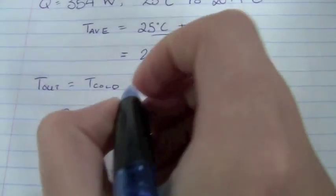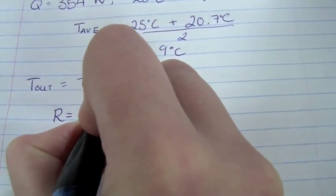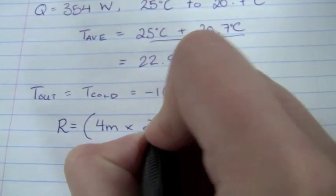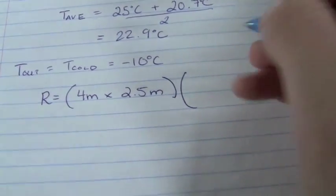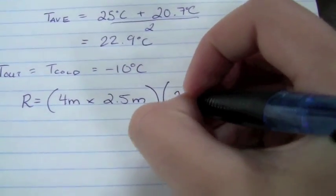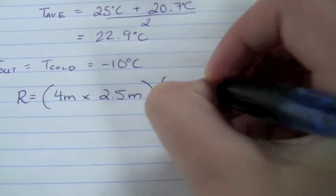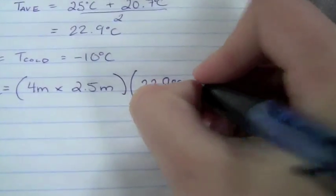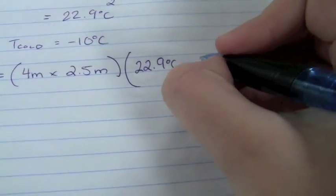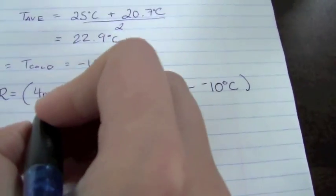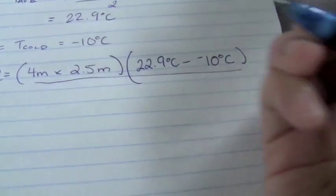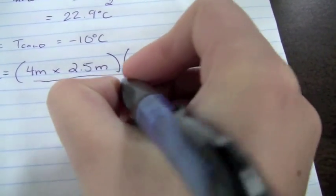Using the same room that we had previously, so one with an area of 4 meters times 2.5 meters, we can plug in our numbers. So our T-hot is 22.9 degrees Celsius, and we need to subtract our T-cold from that, so minus, minus 10 degrees Celsius. All divided by our heat loss, which is 354 watts.